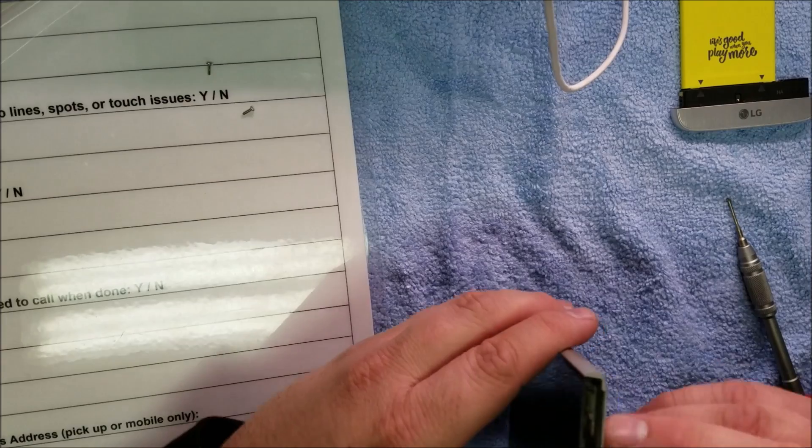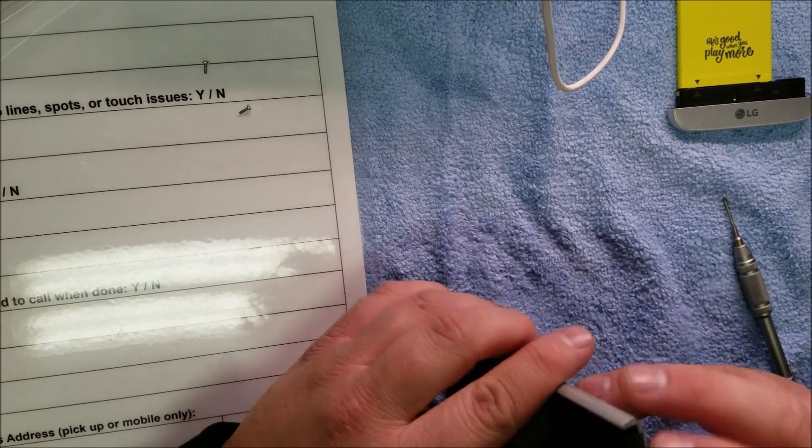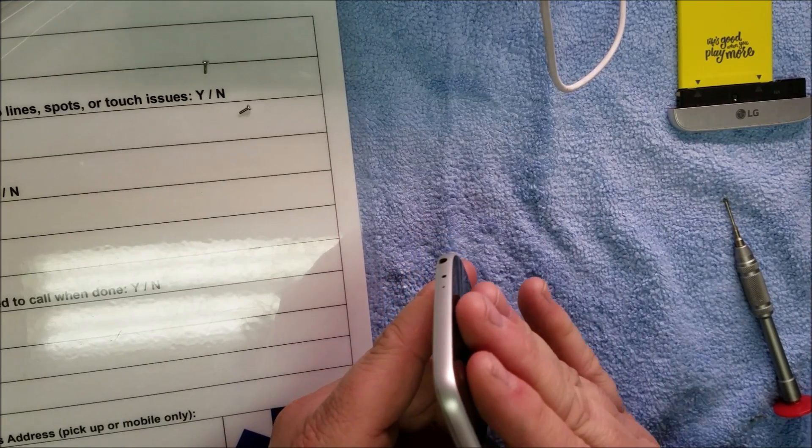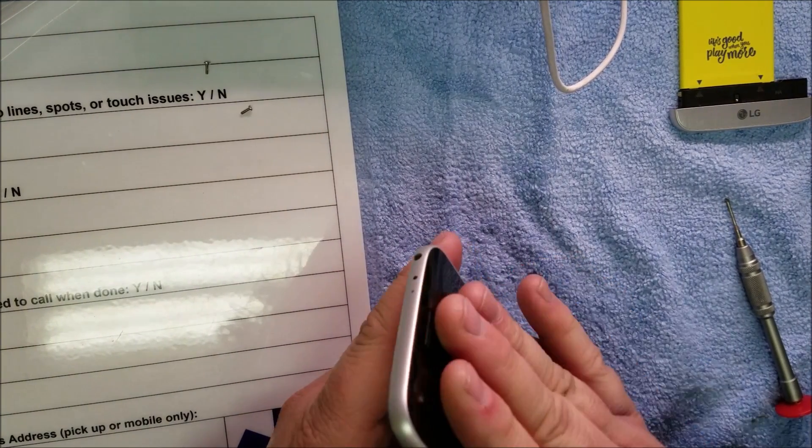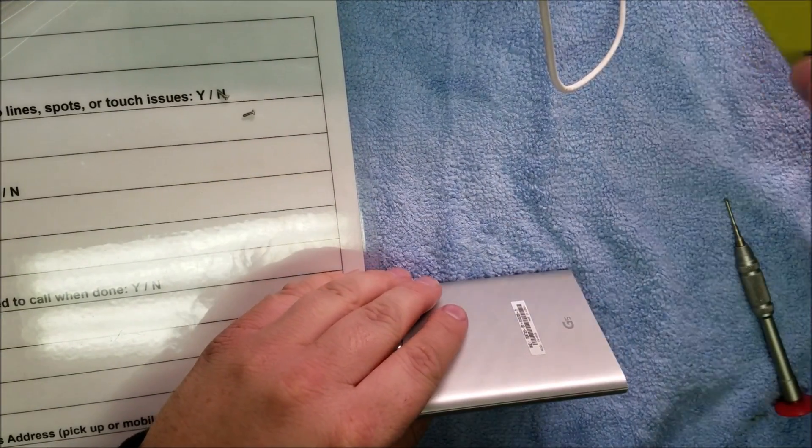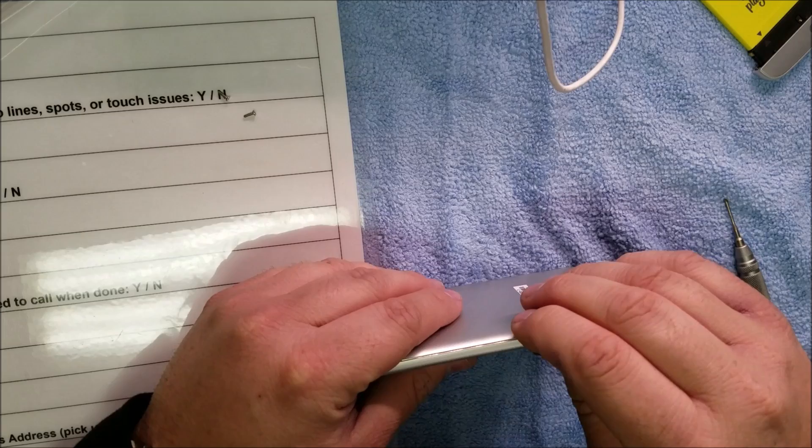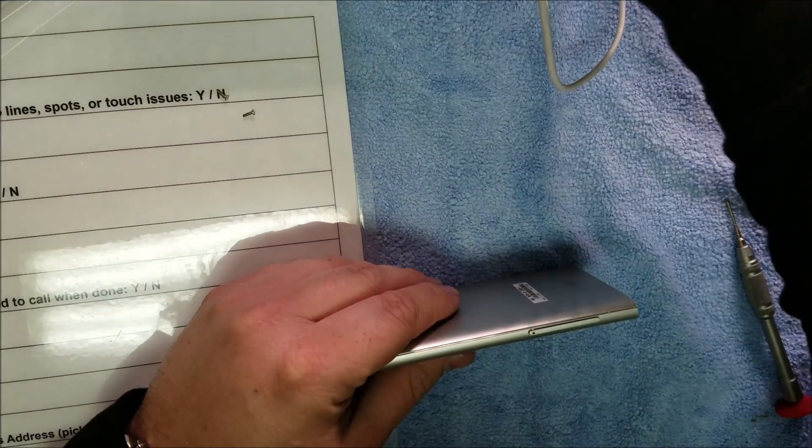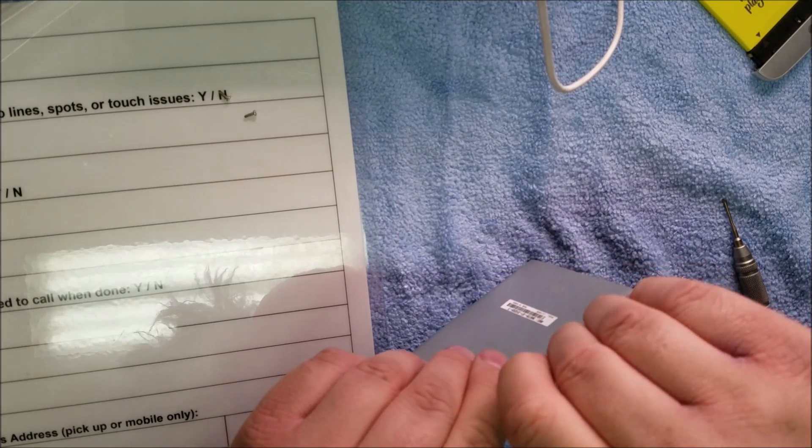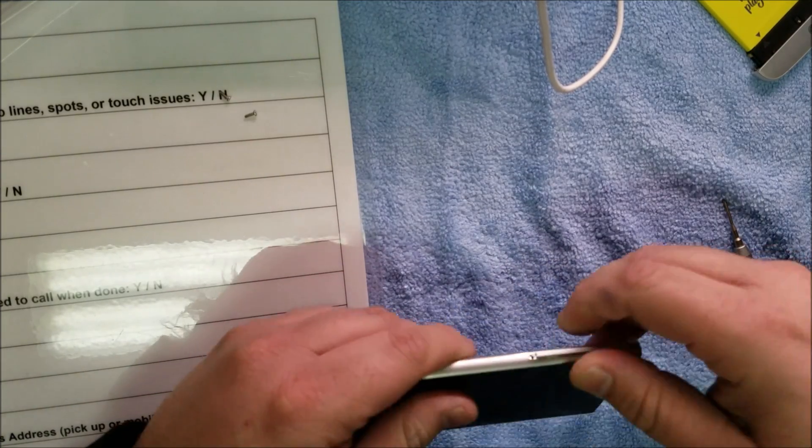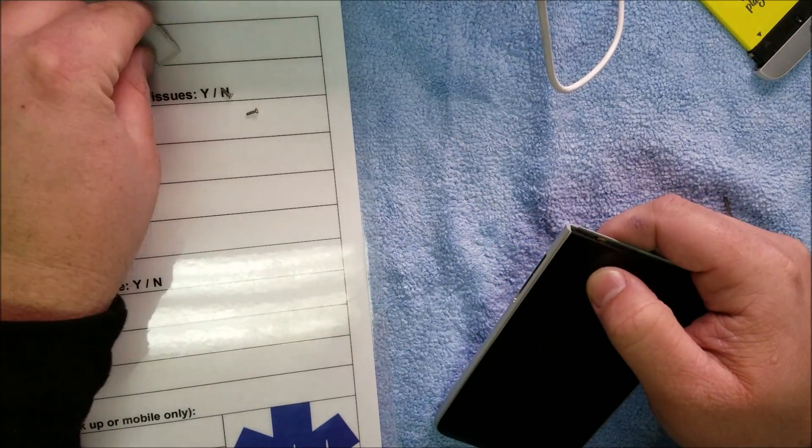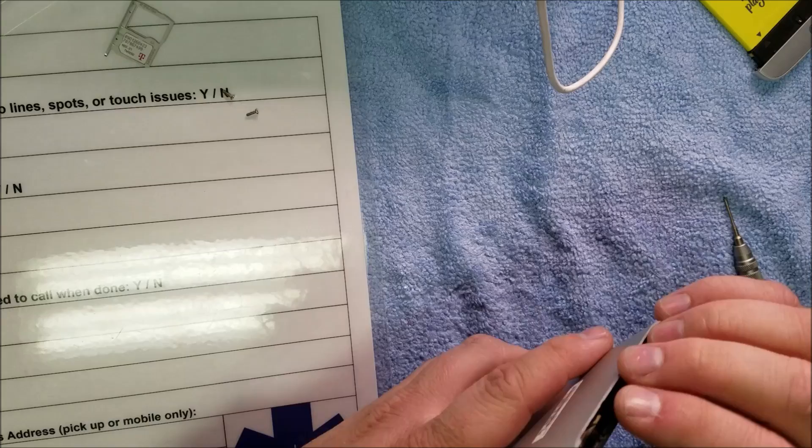That screw came out a lot easier. I do want to point out that the glass is curved over the edge here. So it might make it pretty hard to do glass repair on this. I don't have glass only yet, it's not available. I do have full assembly. So if I do break it I can get a full assembly. If I don't break it then I have to clean the glass off so I can redo the loka.